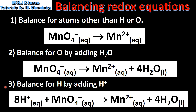Step 3 is to balance for hydrogen by adding H⁺ ions. When we added the 4 H₂O on the right hand side we also added 8 hydrogens, so we balance this by adding 8 hydrogen ions on the left hand side of the equation.